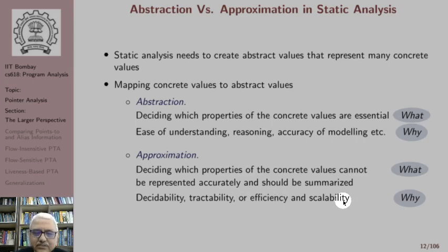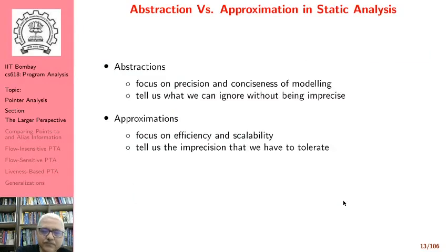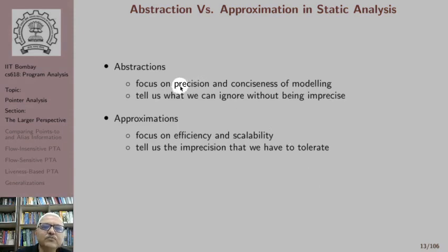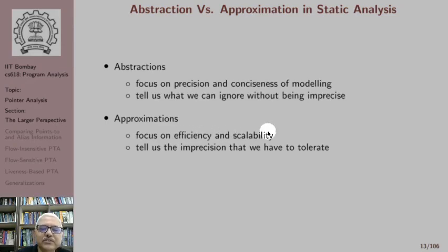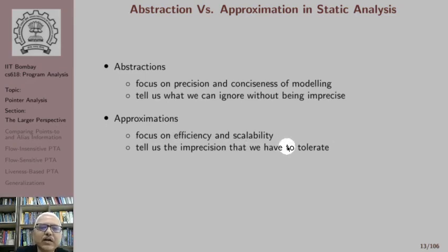That is my take on the distinction between approximation and abstraction. Just to revise: the focus of abstraction is on precision and conciseness of modeling. Abstractions tell us what we can ignore without being imprecise. The focus of approximations is on efficiency and scalability. Approximations tell us the imprecisions that we must tolerate because there is no other way out in order to meet efficiency and scalability.